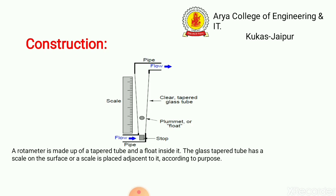Now we discuss the basic construction of the Rotometer. The main components are: first, a scale; second, a tapered glass tube; and third, a float. There are two basic parts — an inlet part and an outlet part. The inlet part is small in size and the outlet is comparatively bigger. A Rotometer is made up of a tapered tube and a float inside it. The glass tapered tube has a scale on the surface, placed according to the application or purpose.